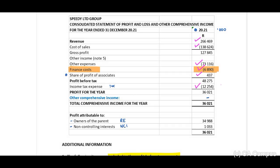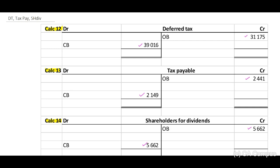In our tax payable account on the credit side, we include our profit and loss amount of 12,254. Let's get these amounts recorded and check them off.